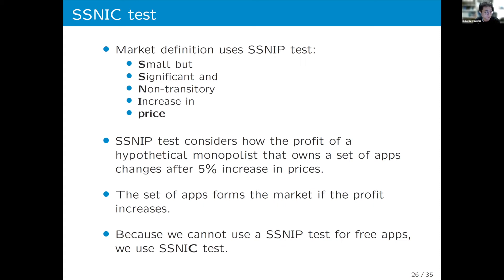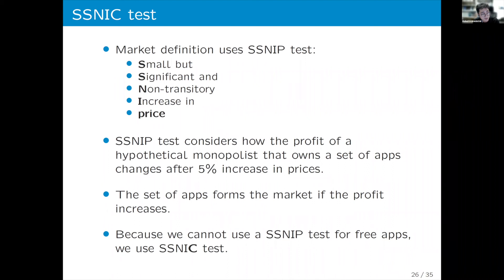We extend the standard SSNP test to an SSNC test by replacing price with the consumer's cost. The SSNC test considers how the profit of a hypothetical monopolist that owns a set of apps changes if the consumer's cost is forced to increase by 5%. A set of apps is regarded as forming a market if profit increases as a result of this forced price increase. Since we cannot use a standard SSNP test for free apps, we use the SSNC test.